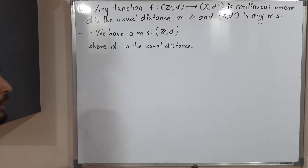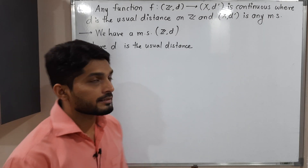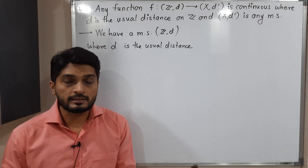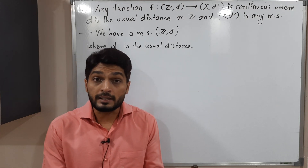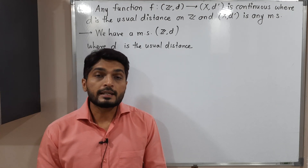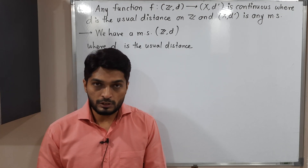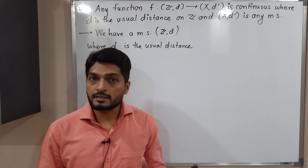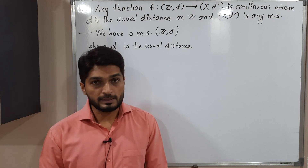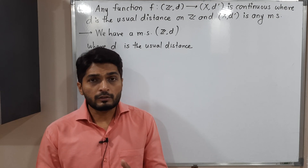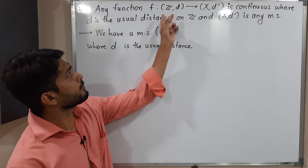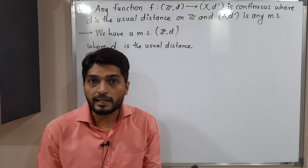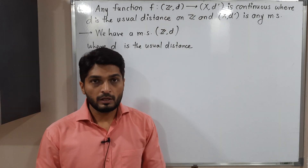Hi everyone. In this video we are going to discuss this result. This result says: if you have a metric space Z_d, where Z means the set of integers and d is the usual distance, and X_d' is any metric space, then if you define any function f from Z_d to X_d', then it is definitely a continuous function.